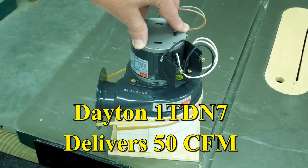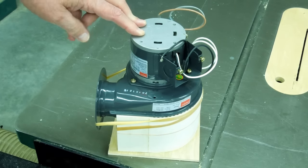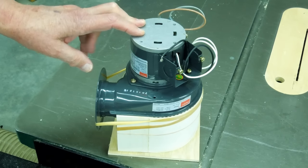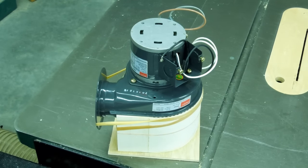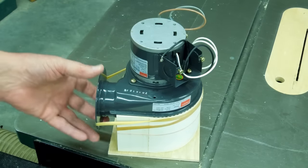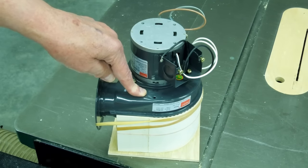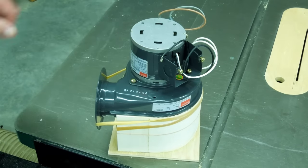This is a small 110 volt Dayton squirrel cage blower. This will deliver 50 cubic feet a minute with no resistance, that means no back pressure and no resistance on the suction side. These do not have a flange on the suction side, they're generally expected to be drawing free air.